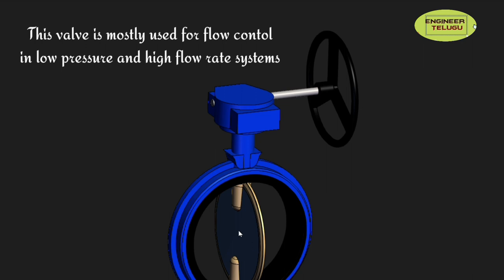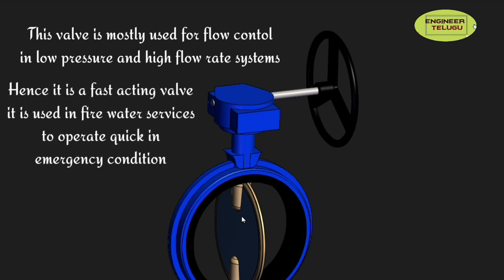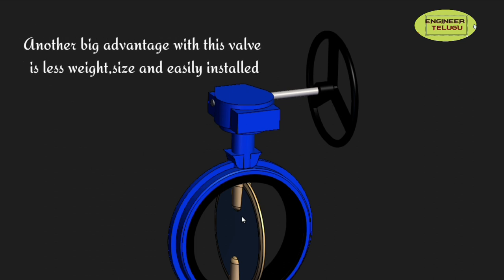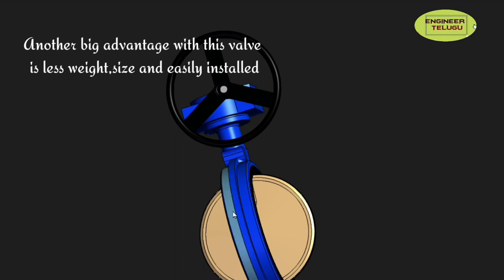It operates at low pressure because high pressure on the disc creates a lot of force. It is mostly used in low pressure water services: mostly water services, fire water services, industrial water services, and cooling water services. This valve is mostly lightweight because it has a minimal metal design. Comparatively, gate and globe valves have a lot more metal. It is easy installation, low weight, and low cost.